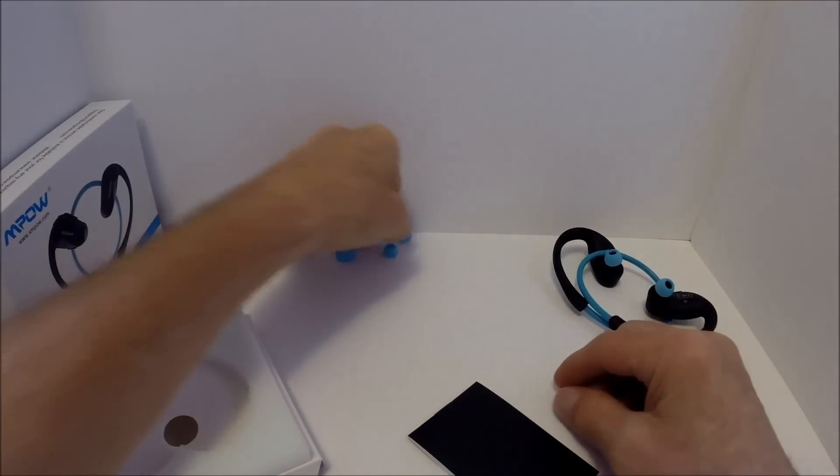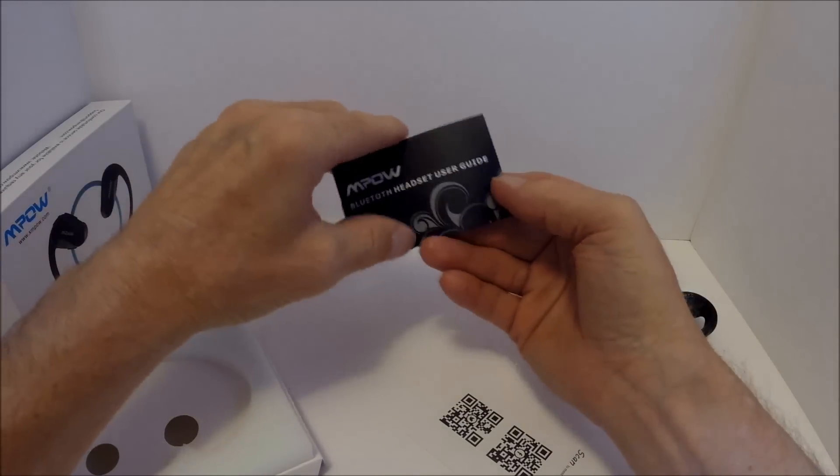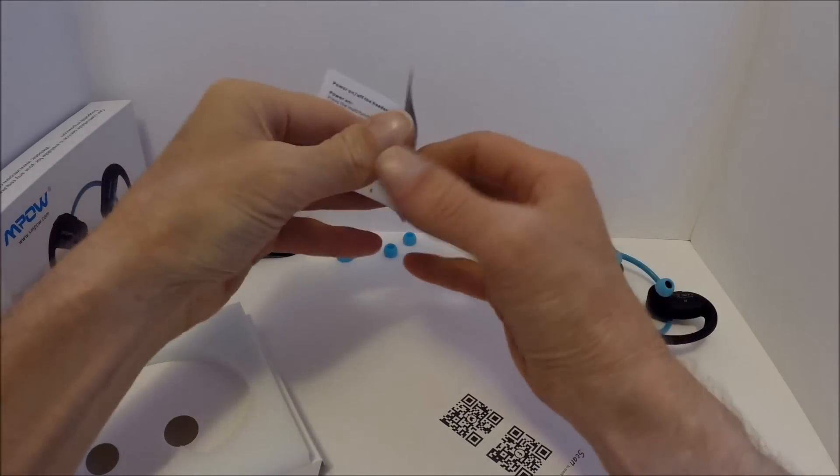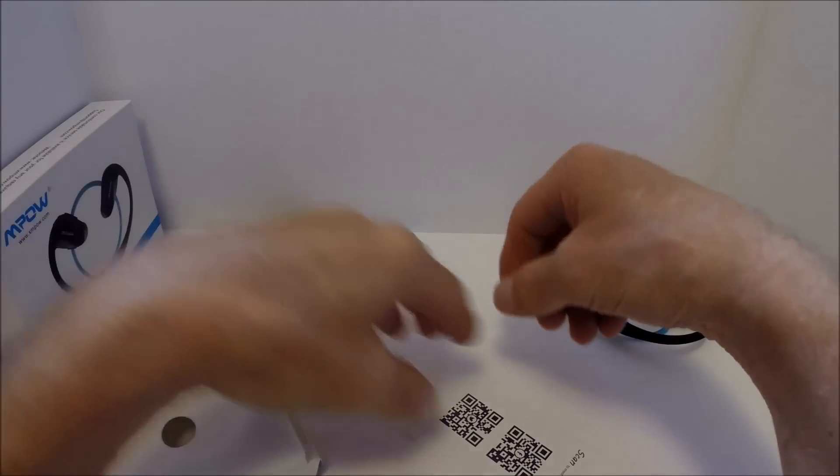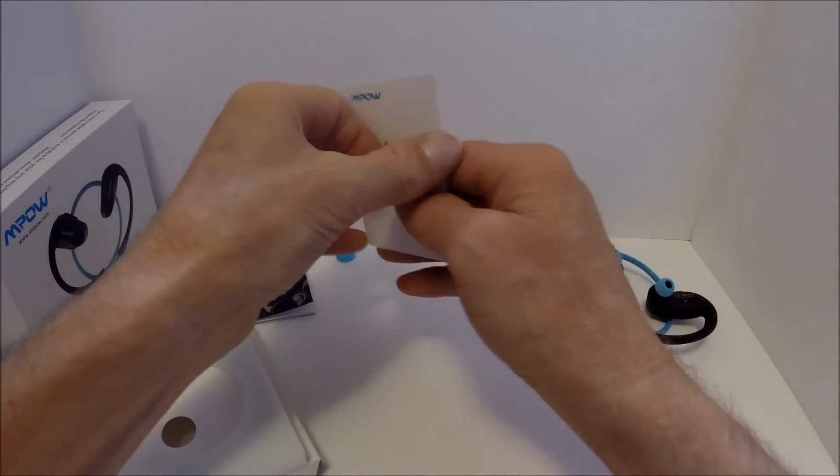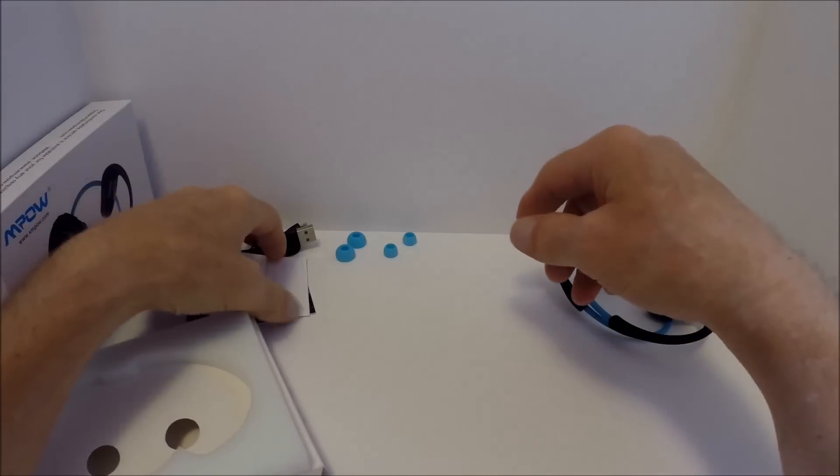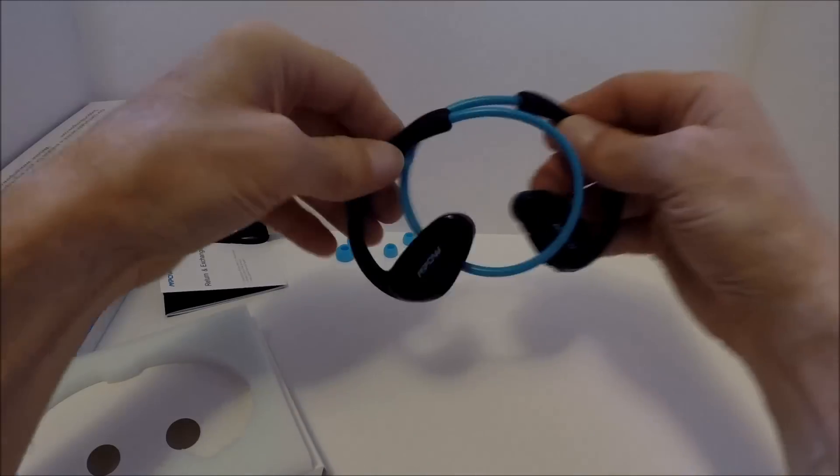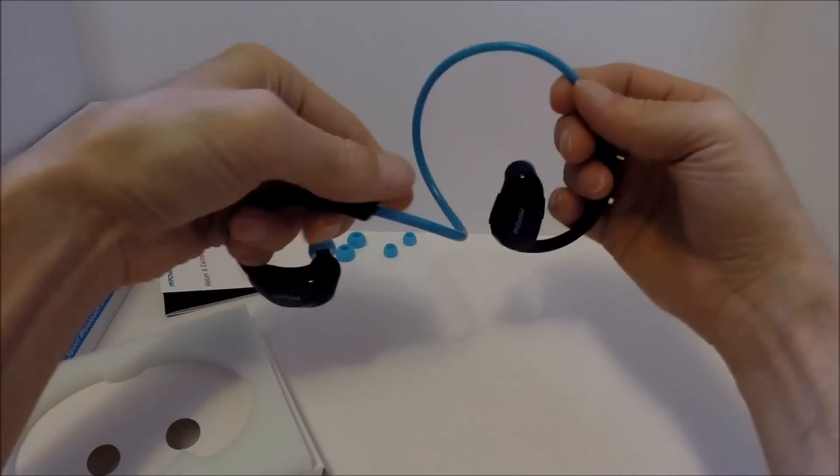You have your little user manual, which some people may need but Bluetooth devices all pretty much work the same, and your return and exchange card. So that's what's included. This particular unit is the black and blue as you can see.